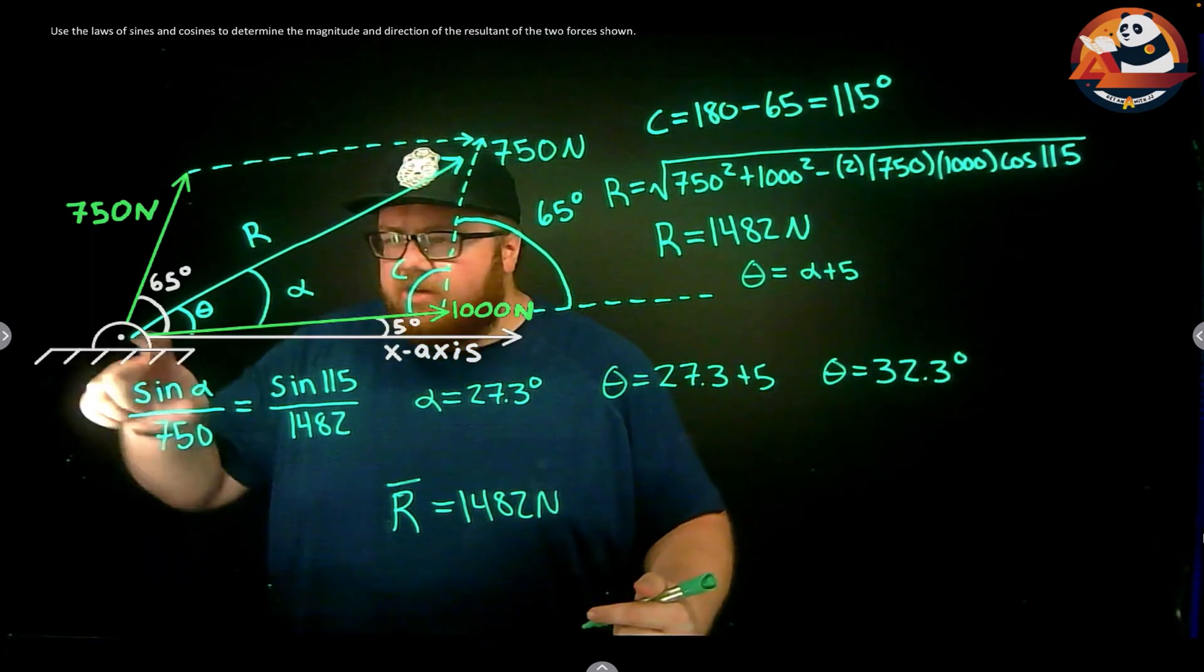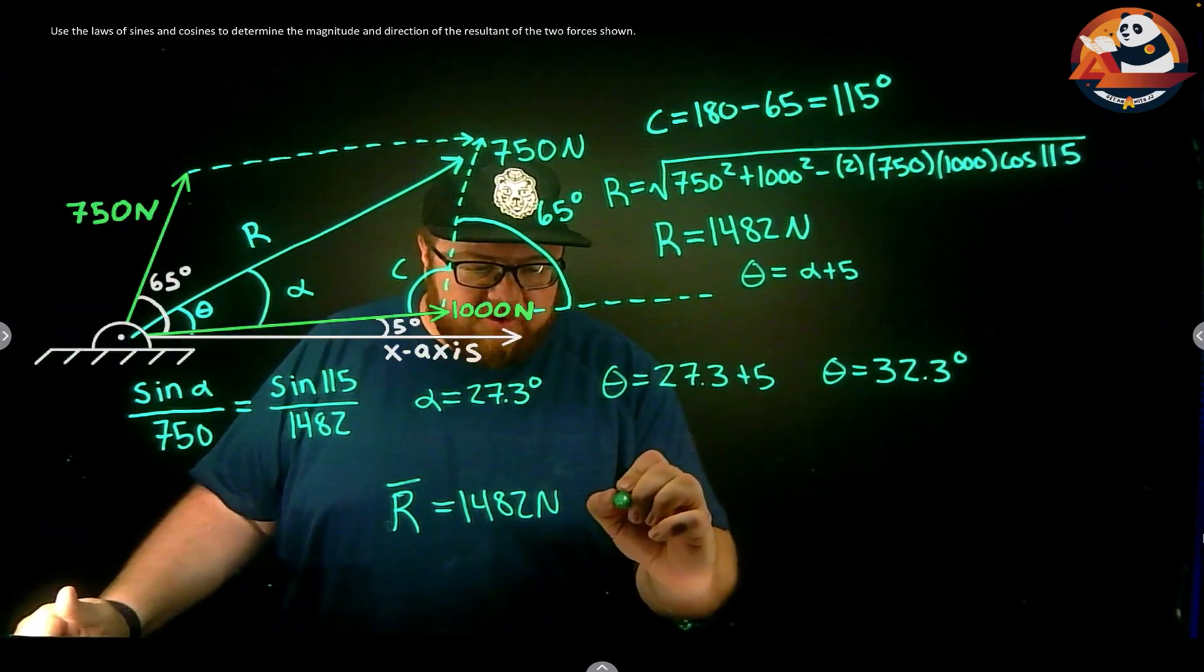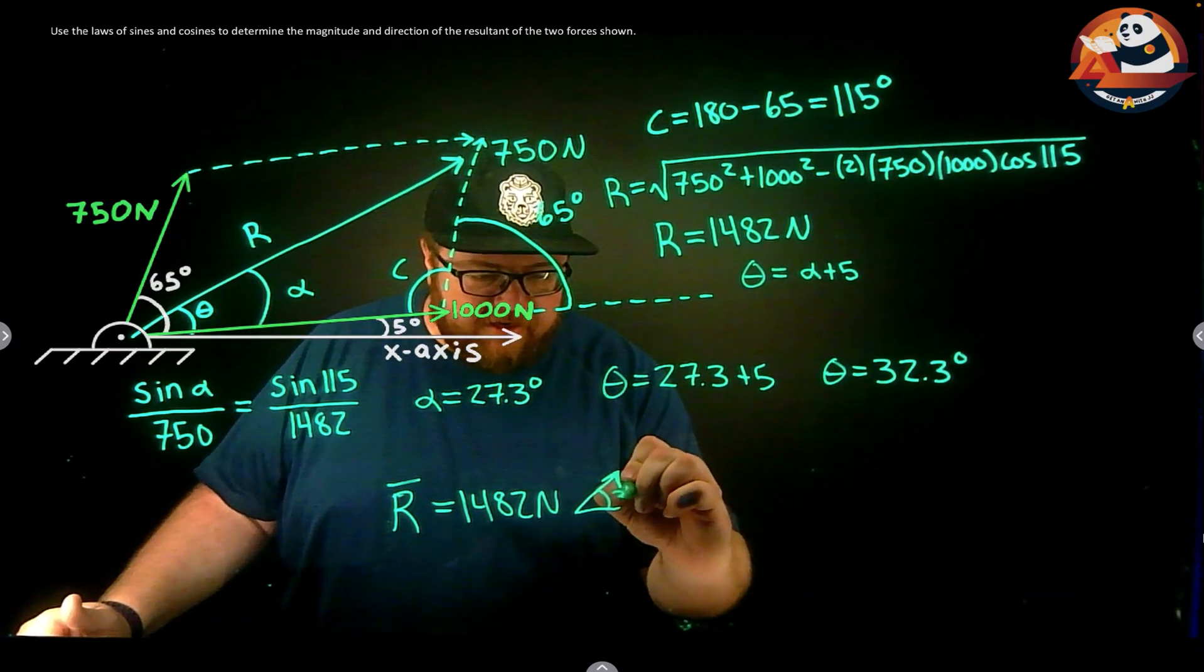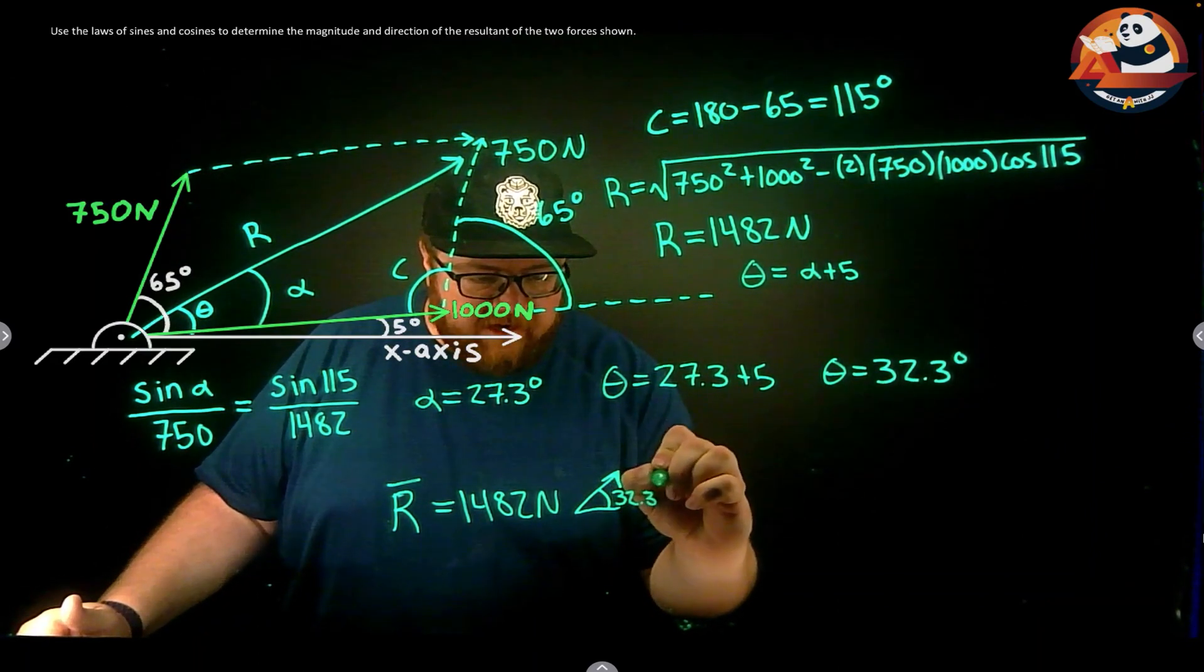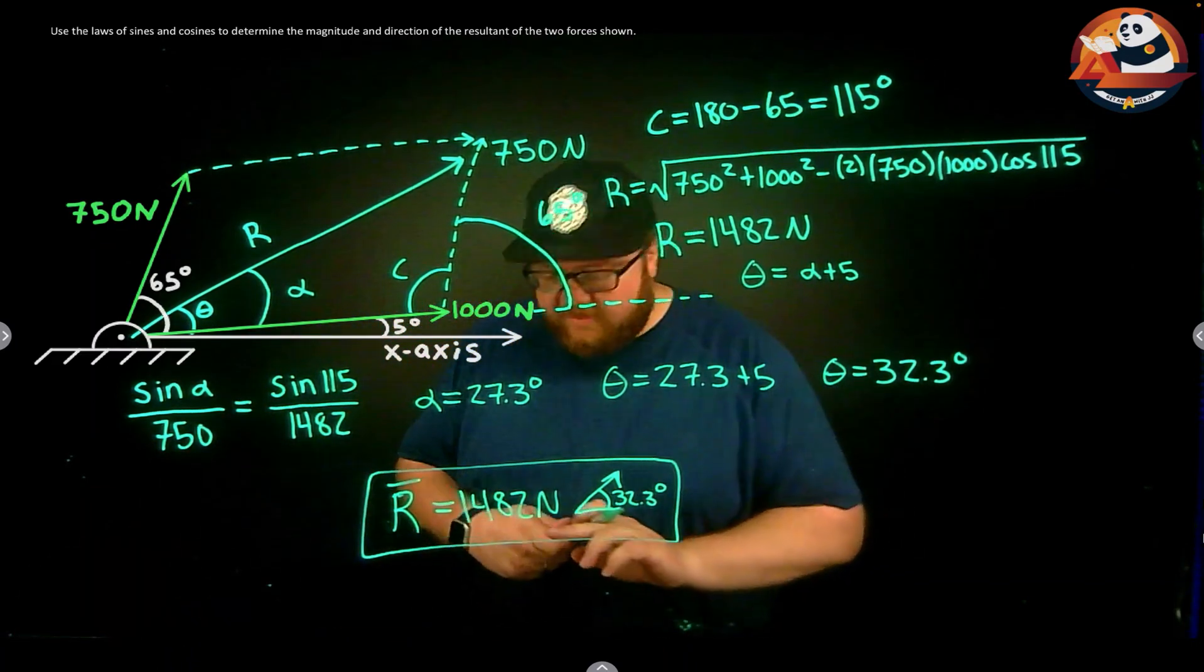And our angle is 32.3. We know that's measuring into the first quadrant because we can graphically see that. So let's draw a picture that looks like that into the first quadrant - 32.3 degrees, which should be our final answer for everything.